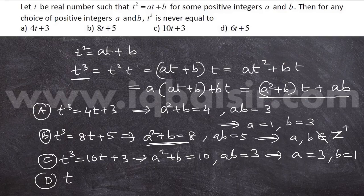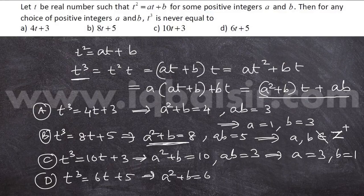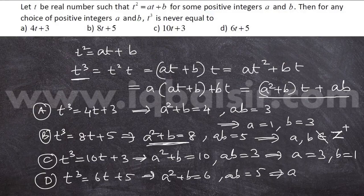In D, t cubed is equal to 6t plus 5. We have a squared plus b is equal to 6 and ab is equal to 5, which means a equal to 1 and b is equal to 5.